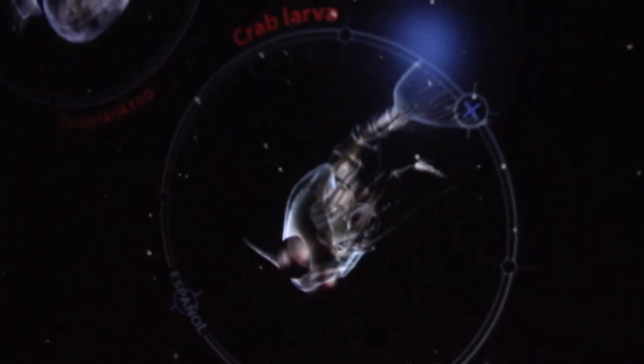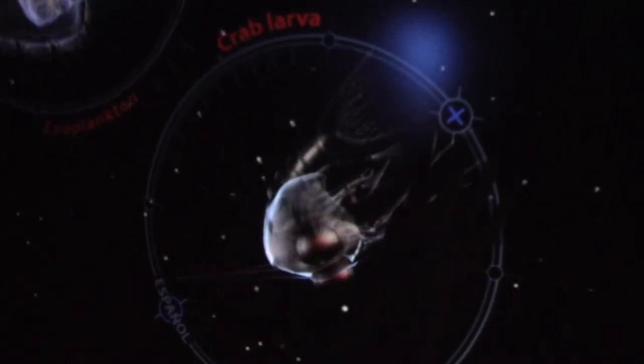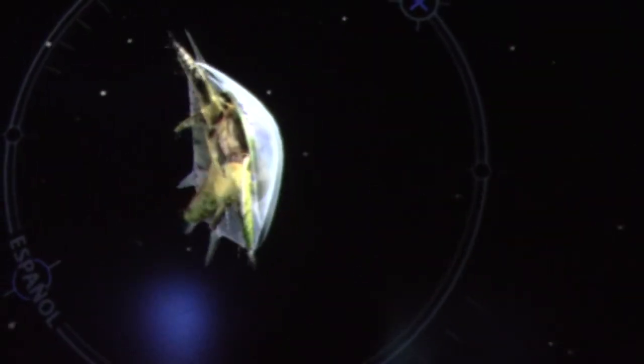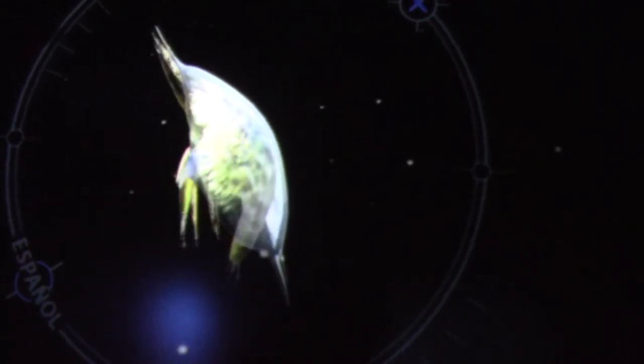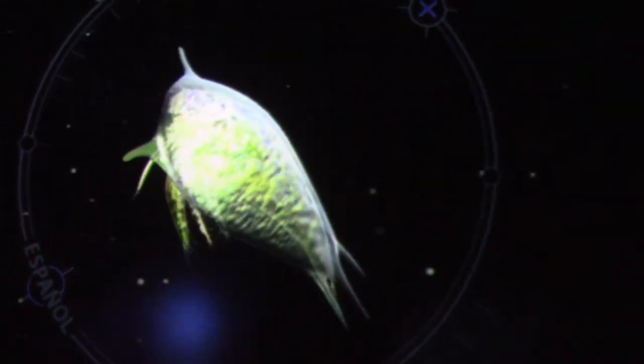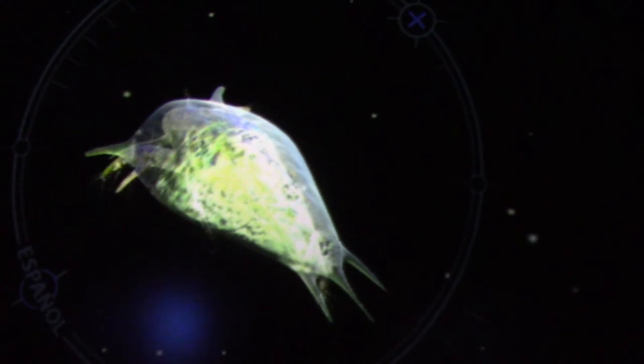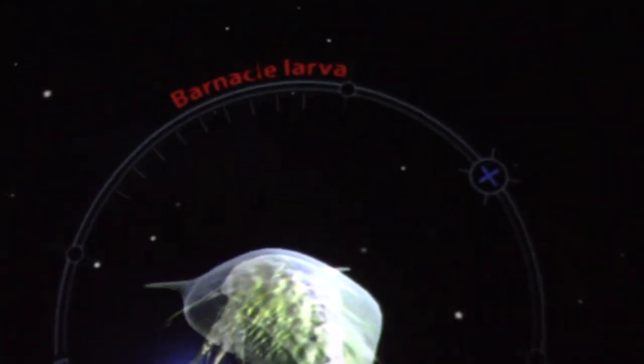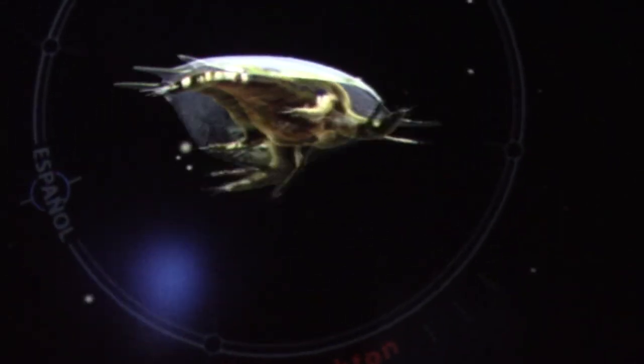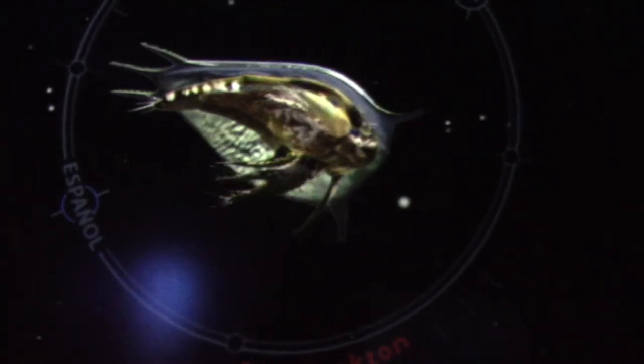This tiny crab larva will get much bigger if it survives. Here's another mystery. This is also a larva, but of what animal? As an adult, this barnacle will attach itself to another object, forming a shell and catching plankton to eat with its foot.